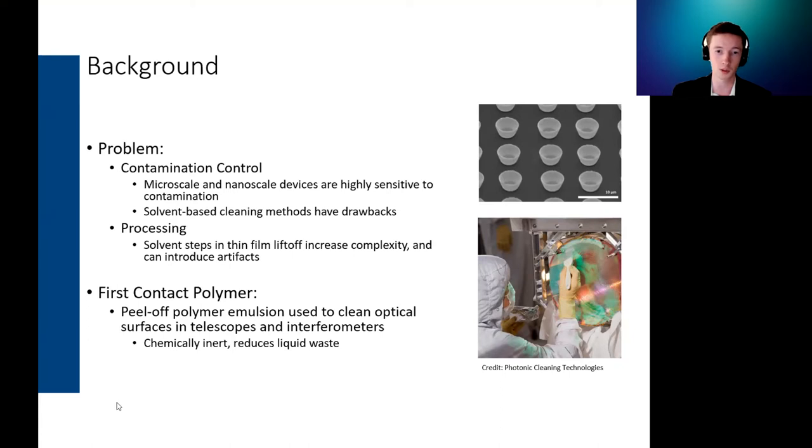People have worked with supercritical CO2 for decontamination and used mechanical polishing to remove fences. The problems with these though is that they're effective but can be pretty expensive, harsh on the sample, and might introduce extra complexity in your process or an opportunity for error while you're working on your sample.